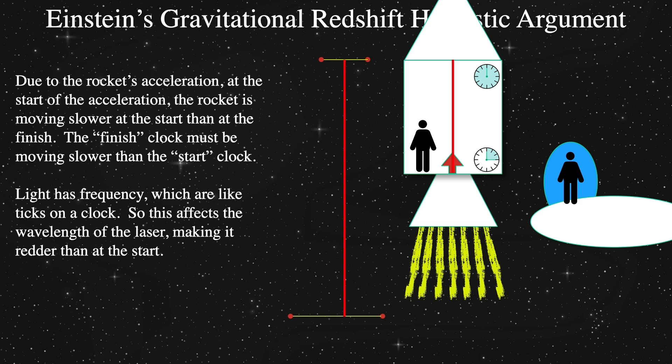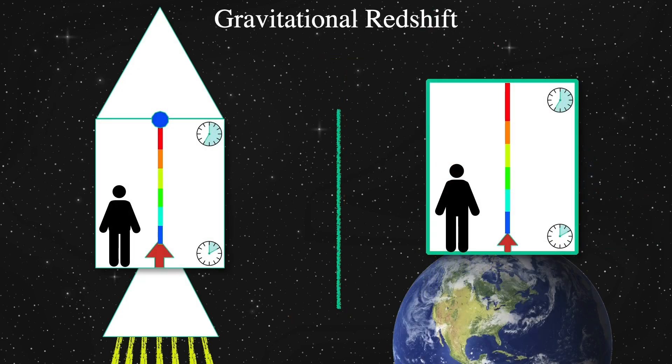The accelerated non-inertial observer will measure a laser that has a lower frequency at the top than compared to the bottom. And, by the equivalence principle, this is exactly the same as what would happen in a gravitational field. So now let's depart from these thought experiments and examine a real-world experiment that doesn't involve rockets and closed rooms.